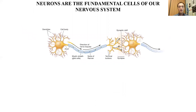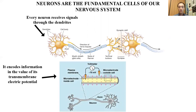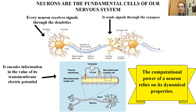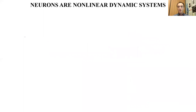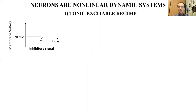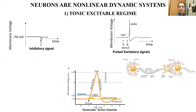Everybody knows that the primary cellular elements of our nervous systems are the neurons. Every neuron receives signals through its dendrites, encodes information in the value of its transmembrane electric potential, and sends signals through the synapses. The computational power of a neuron relies on its dynamical properties — neurons are non-linear dynamical systems that can work in different dynamical regimes. For example, in the tonic excitable regime, in the absence of any perturbation, a neuron remains in its hyperpolarized state indefinitely, characterized by a negative transmembrane electric potential. If such a neuron receives an individual signal, it maintains its hyperpolarized state.